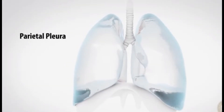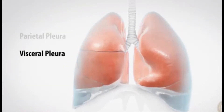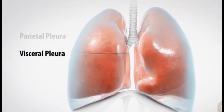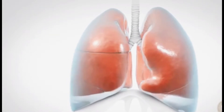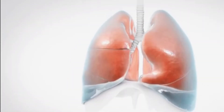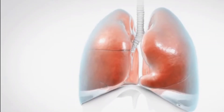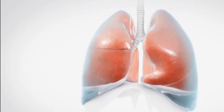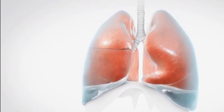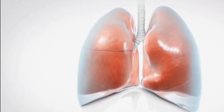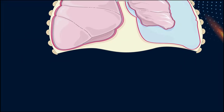The pleural space is formed when the two layers of the pleura fold over one another. It includes a thin layer of fluid that keeps the two layers from rubbing against each other in normal circumstances. However, when the pleura is damaged, air from the outside or from the lungs can freely enter the pleural space but cannot leave the area.